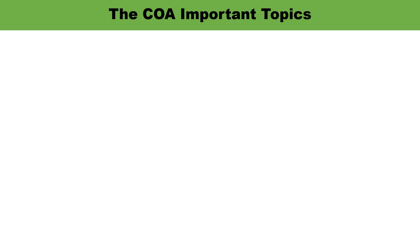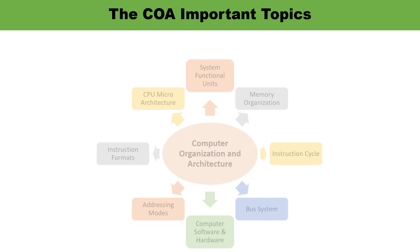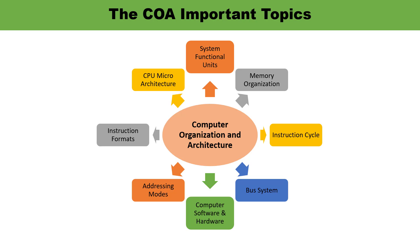Now let's talk about some important topics of computer organization and architecture. First, you must be aware of system functional units — what are the functional units of a digital system, how they are interconnected, what is a bus, how many types of buses are there, and the concept of bus arbitration. Second is memory organization — primary memory, secondary memory, RAM, ROM, memory organization for two-dimensional and 2.5-dimensional, cache memory, auxiliary memory, and virtual memory. It is also related to the instruction cycle — how the instruction is executed and how the overall cycle is represented. The system bus consists of three types: address bus, data bus, and control bus.